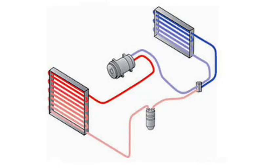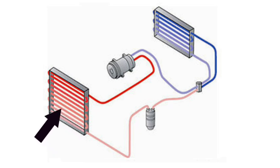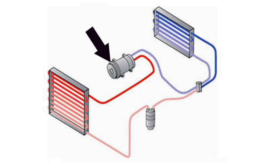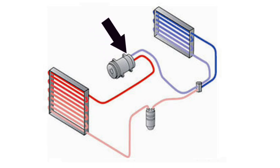Pictured here are five major components of the automotive AC system. Up front, in the high-pressure side of the system, you have the condenser, which is mounted in front of the radiator. Behind that, you have the compressor, which moves refrigerant throughout the system and is driven by a belt on the front of the engine.